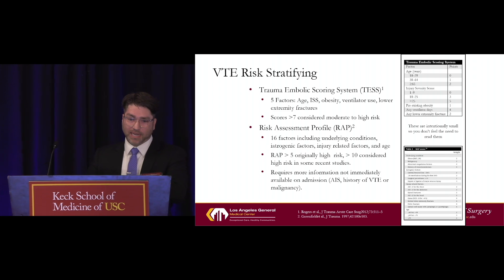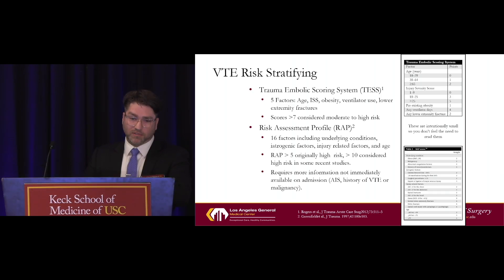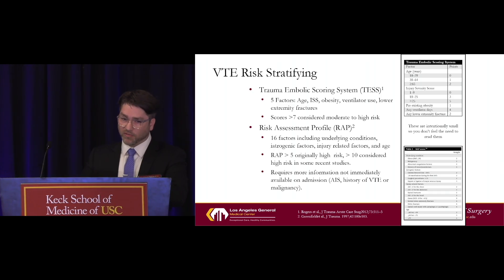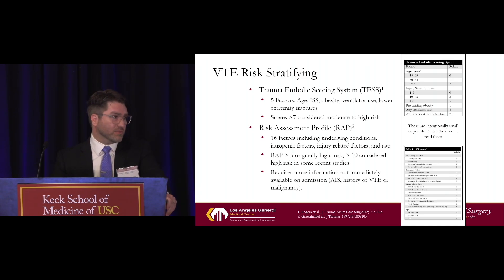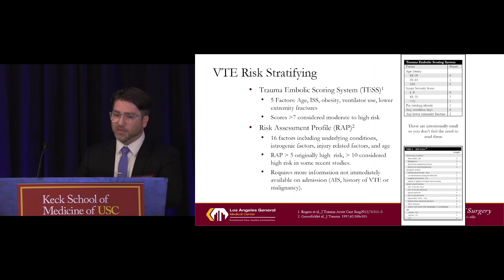The major downside to TESS is that ISS is not calculated when a patient is admitted, so you can't look at them in the trauma bay and say this patient needs screening or not, and so it's not used quite as frequently. The Risk Assessment Profile by Greenfield and his colleagues has a lot more factors — 16 things — including patient history such as malignancy or prior VTE, iatrogenic factors like blood products transfused, injury-related factors including abbreviated injury scores, and age. While originally a score greater than five was considered high risk, most studies now use greater than 10.